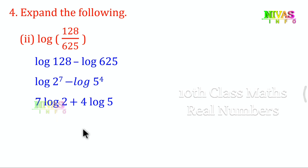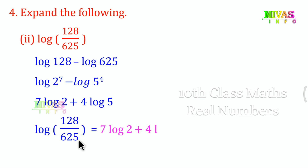So the answer is: log(128/625) equals 7 log 2 minus 4 log 5.